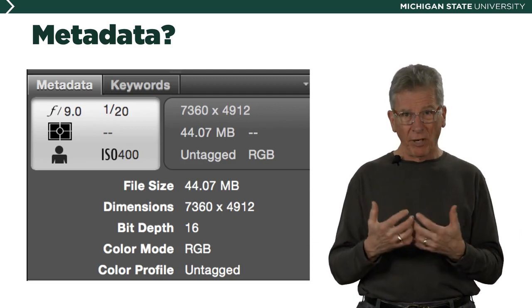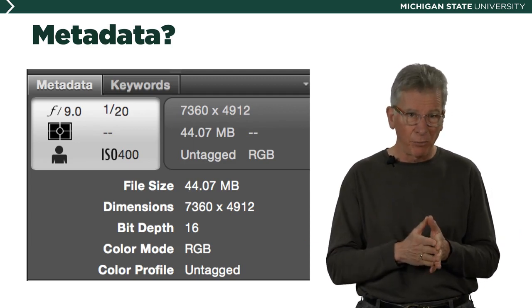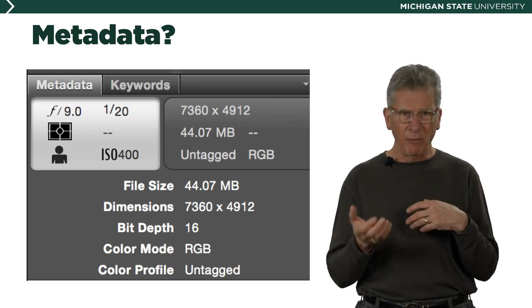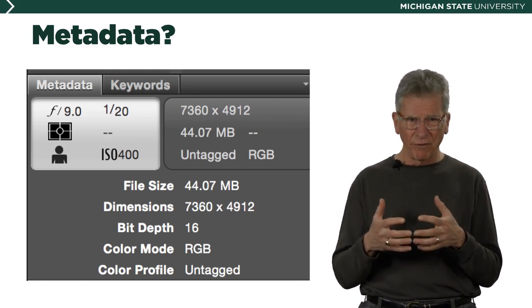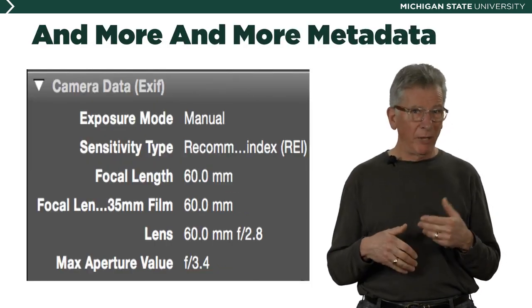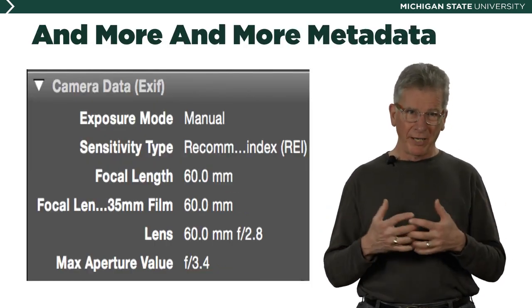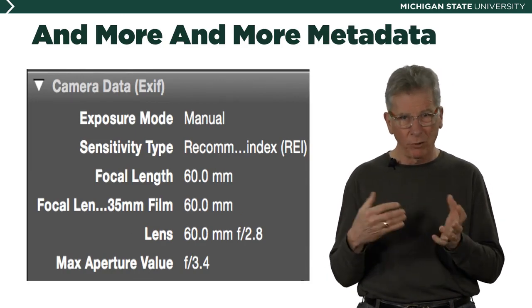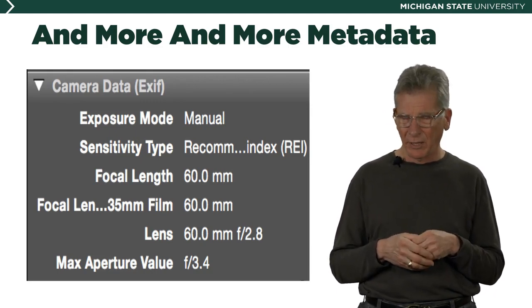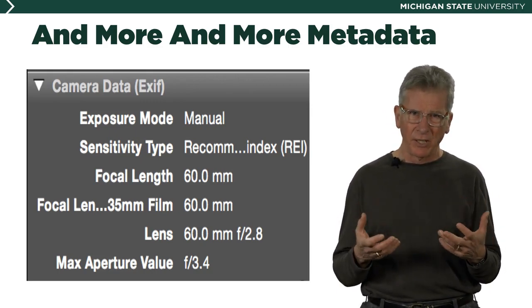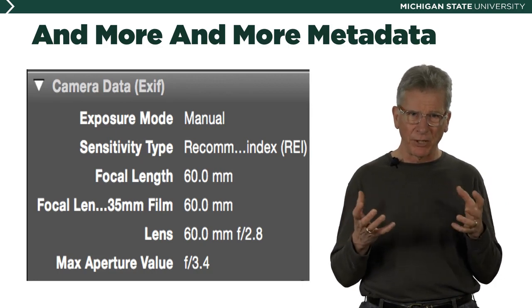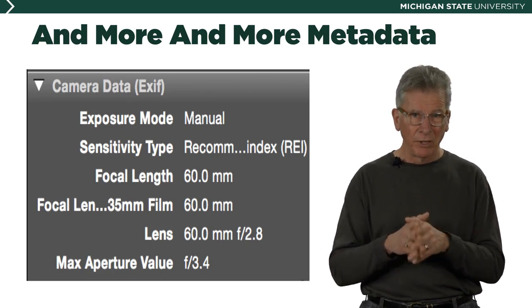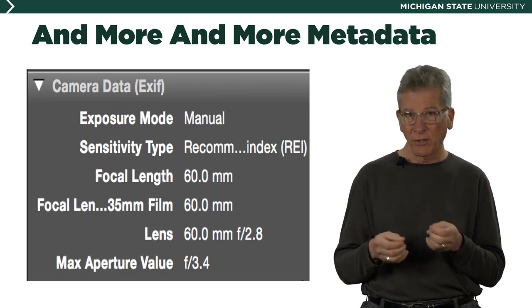What might we find there? We might find the f-stop and the shutter speed, the ISO, the file size, the dimensions of the picture, the bit depth — all sorts of information. We might find more and more metadata: whether the picture was made on manual, automatic, program, or aperture priority, things about the sensor, things about the lens. There's all sorts of information that can be recorded depending on the capabilities of your camera, all held there in that little sidecar.